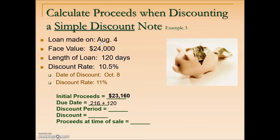When is it due? Since it was taken out August 4th — the 216th day of the year — we add the loan length of 120 days to get the 336th day of the year, which translates to December 2nd. The discount period is the time remaining from the date of the discount, October 8th, to the maturity date, December 2nd. December 2nd is the 336th day and October 8th is the 281st, so the bank purchasing this note will hold it for the remaining 55 days until it matures.